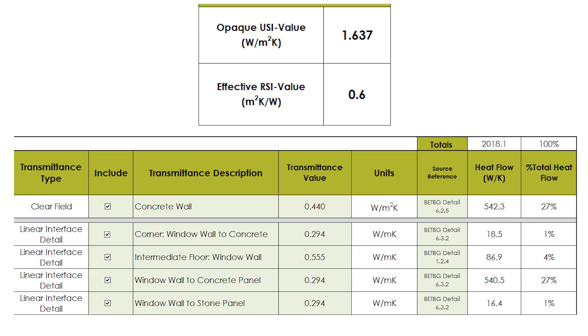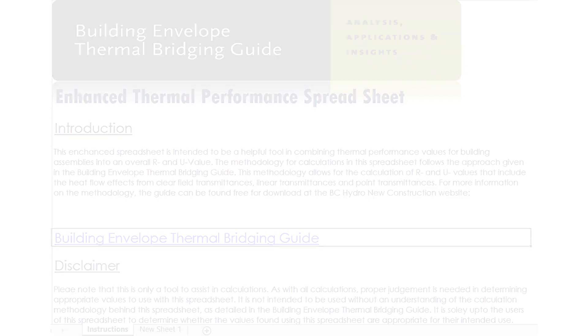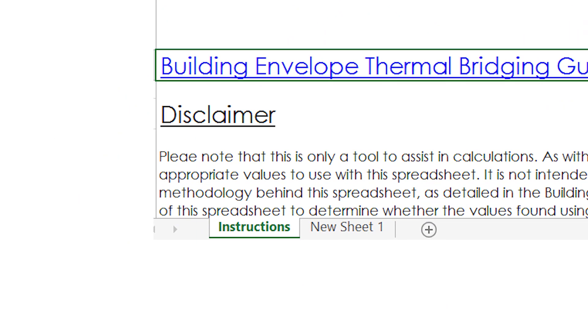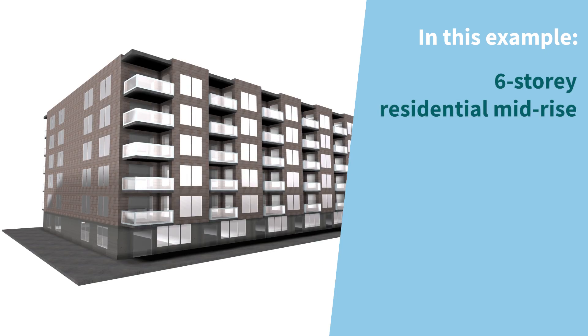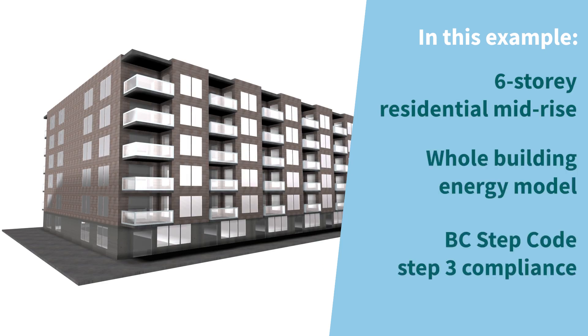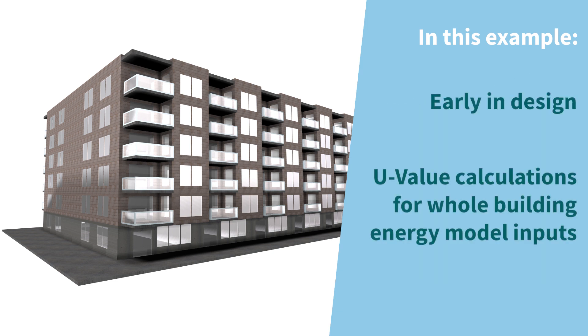The spreadsheet also allows different details to be turned on and off, allowing you to include or exempt the impacts of specific details. Further instructions can be found within the spreadsheet. For this example, let's look at a simple project: a six-storey mid-rise building that requires a whole building energy model for compliance to the BC Step Code. We've been brought on board early in the design to conduct thermal bridging calculations for inputs into the whole building energy model.